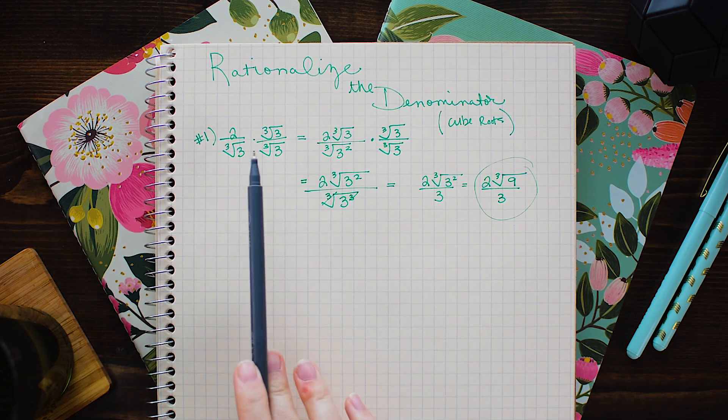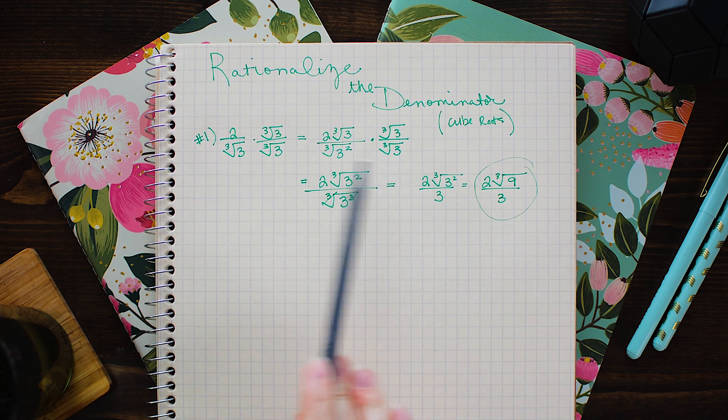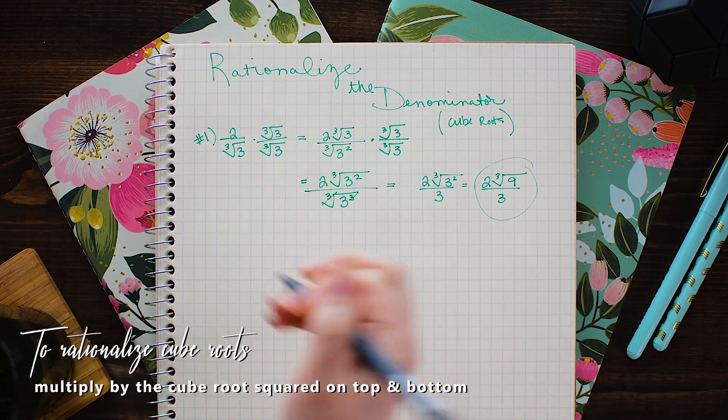So you could go through this and you could multiply by the cube root of 3 over itself twice. But why do that when we could just do it in one step?